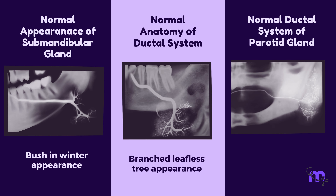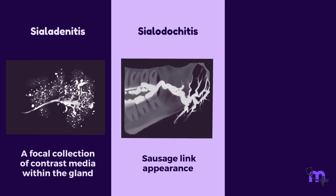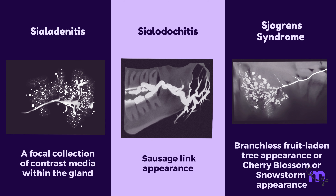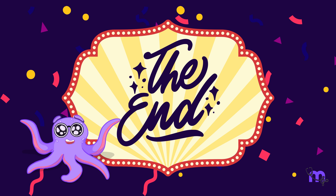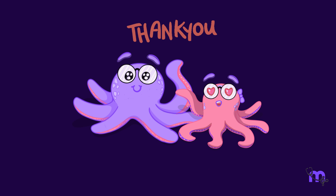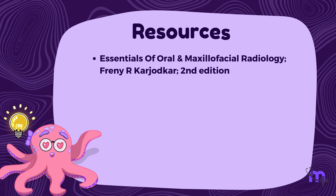Feel free to take a screenshot. The normal appearance of the submandibular gland shows normal anatomy of the ductal system with a branched leafless tree appearance. Normal ductal structure of the parotid gland shows a tree in winter appearance. Sialadenitis shows a focal collection of contrast media within the gland. Sialodochitis shows a sausage link appearance. Sjögren's syndrome shows a branchless fruit-laden tree appearance, also called cherry blossom or snowstorm appearance.